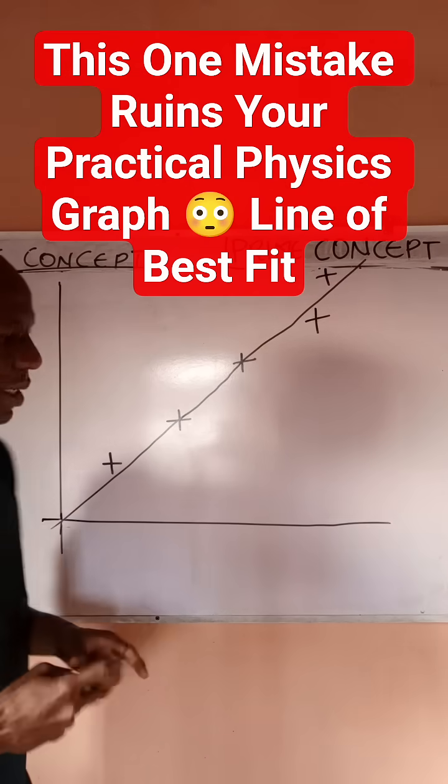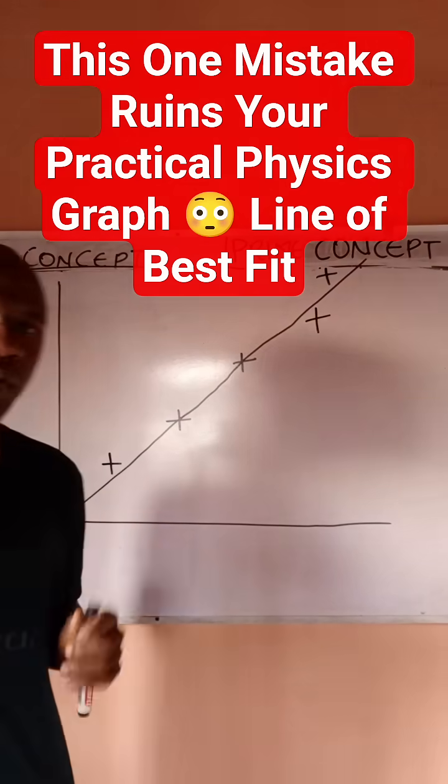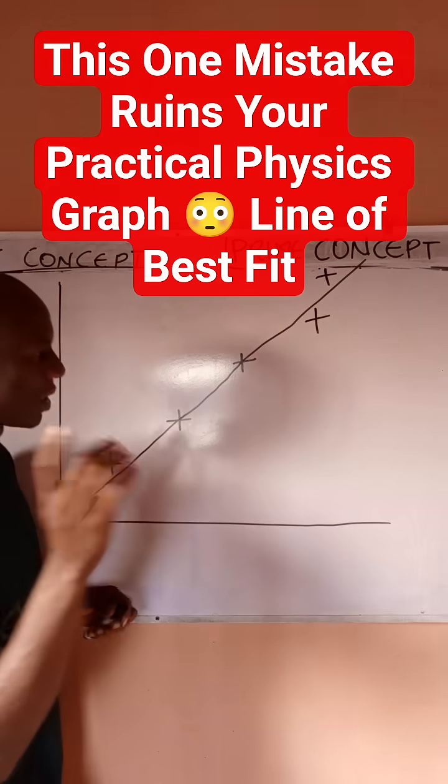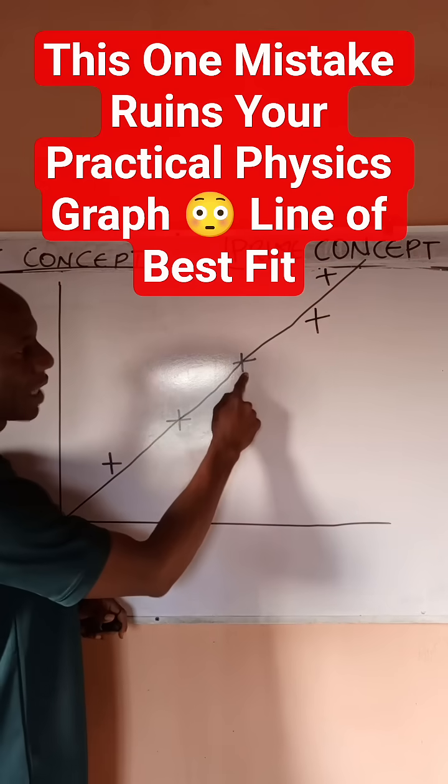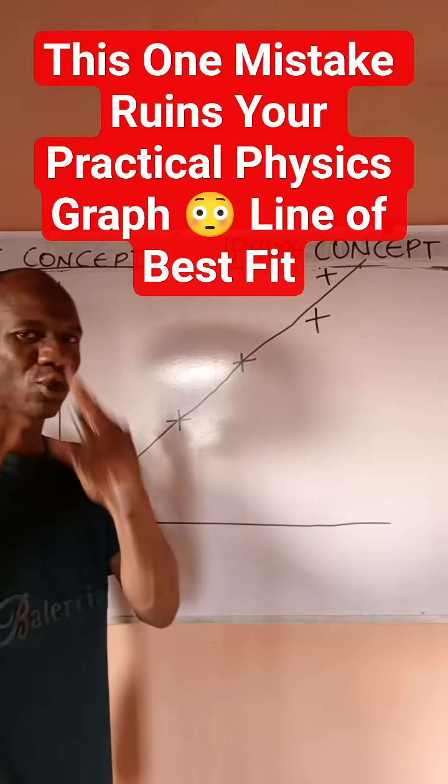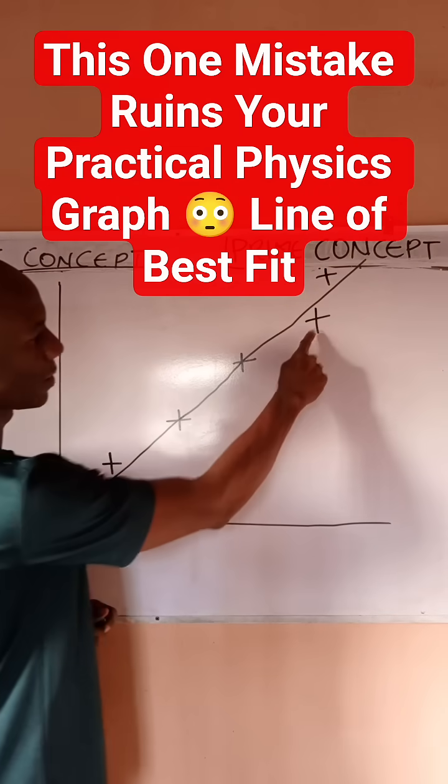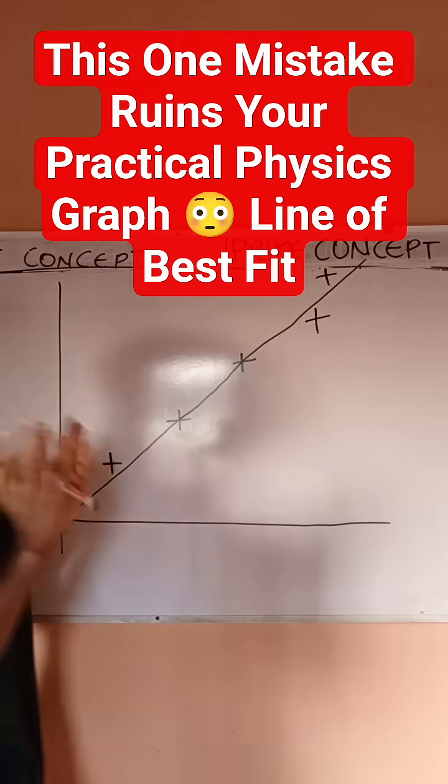Now you'll notice that my line of best fit was only able to accommodate how many points? Two points: this and this. How many points were not accommodated? You are very correct—three points: one, two, three. Now you would